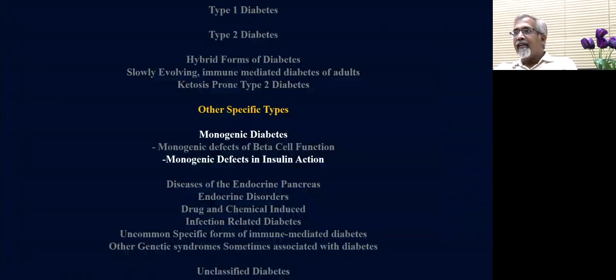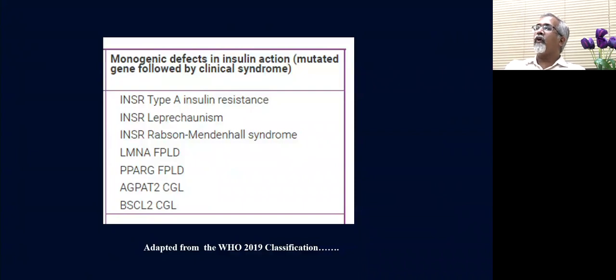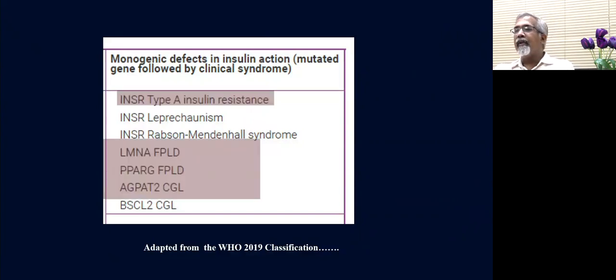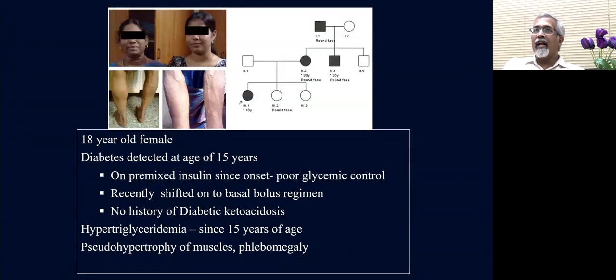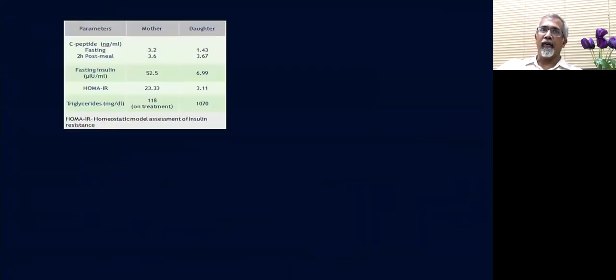Other forms include those with insulin resistance, and the WHO classification lists the common forms. An 18-year-old female with diabetes detected at age 15 years on premixed insulin stopped her insulin for four to five days at age 16 but never went into ketoacidosis. She had hypertriglyceridemia from age 15 and her mother also had diabetes. Both mother and daughter had elevated C-peptide levels and markedly elevated HOMA-IR, particularly in the mother, with hypertriglyceridemia in the daughter.